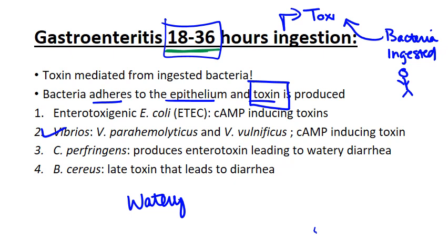The most common cause of this in the United States is Vibrio — those comma-shaped organisms. We don't really have cholera in a significant way in the US, but we do have other Vibrio species: specifically Vibrio parahaemolyticus in saltwater shellfish, and Vibrio vulnificus in brackish water where oysters and crabs live. Not as severe as cholera, but they both produce cyclic AMP-inducing toxins giving you that watery diarrhea. Importantly, there's no fever — these are non-invasive and afebrile. Any toxin-mediated gastroenteritis is afebrile — that's a key clue.